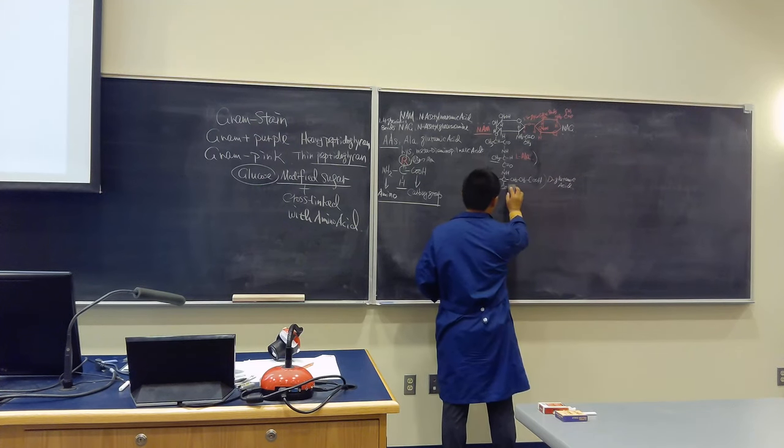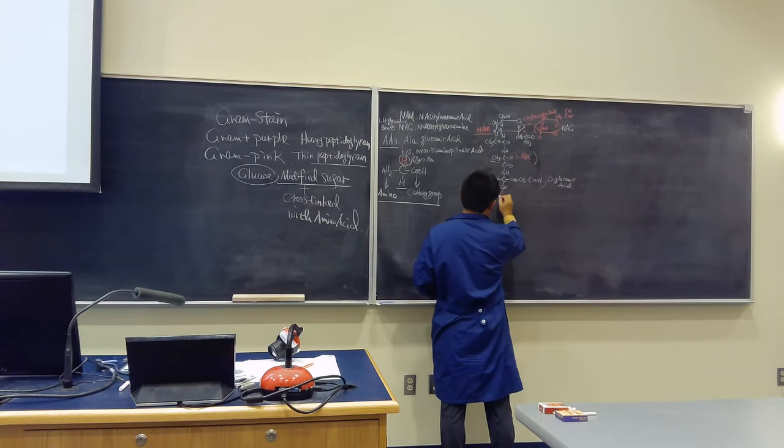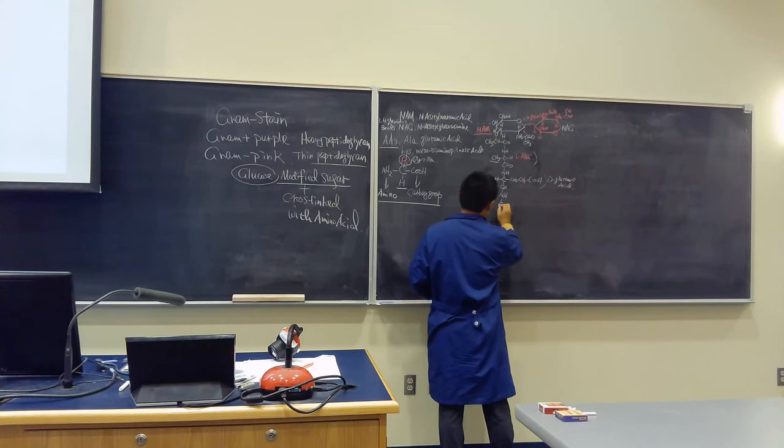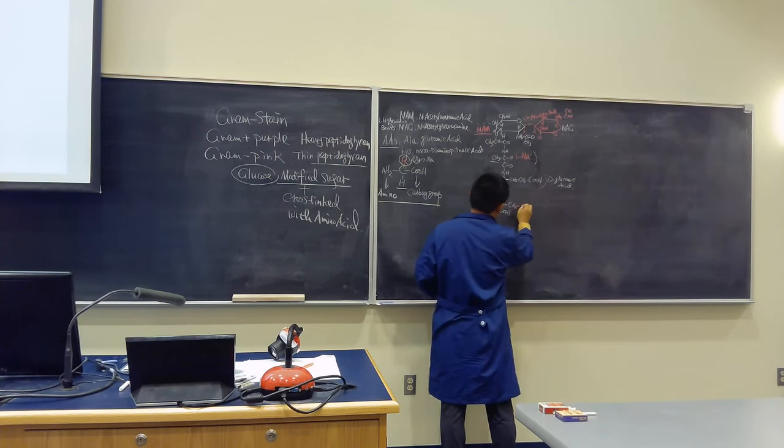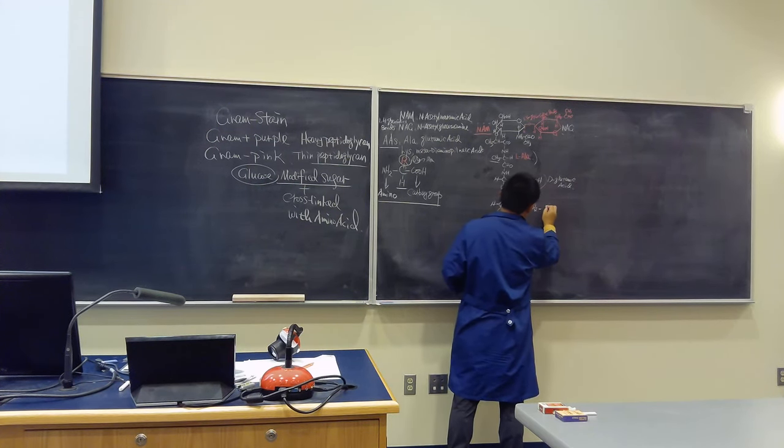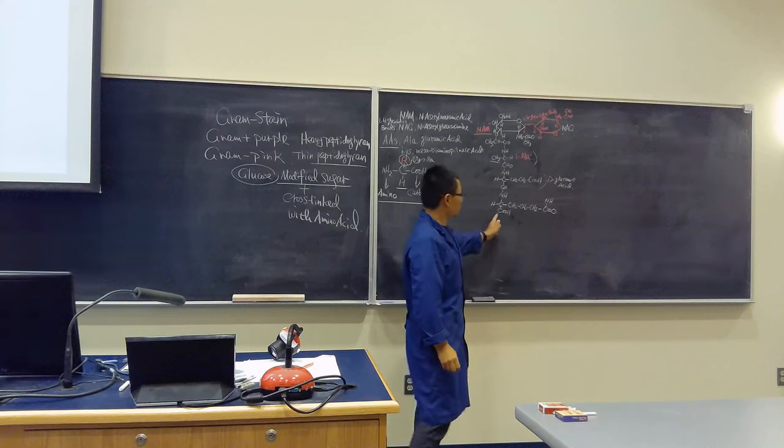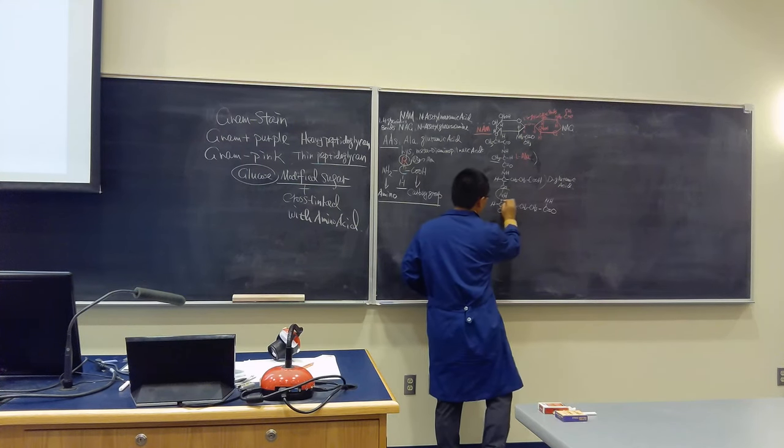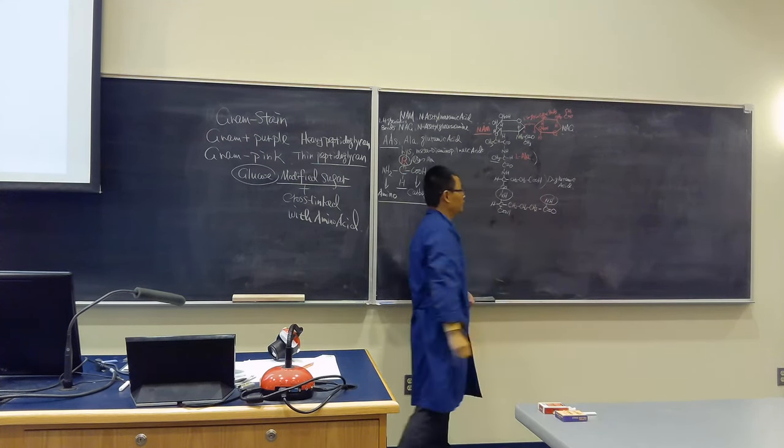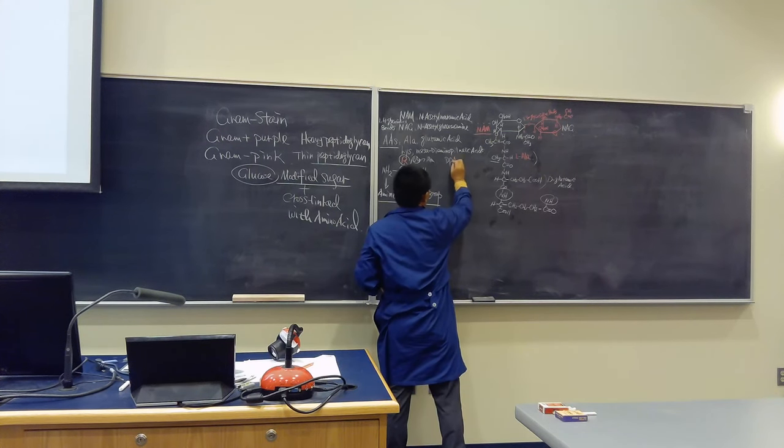What are we going to do? This guy here, we connect with another NH. Then go here - we'll have H-C-COOH. Then CH2, CH2, CH2, CH2. Then we'll have CNH2. What is this? Two amino groups - meso-diaminopimelic acid. Just say DPA.